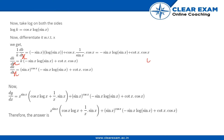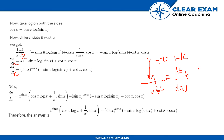Now we have supposed y equals t plus k, hence dy by dx equals dt by dx plus dk by dx.